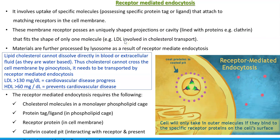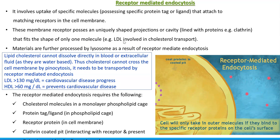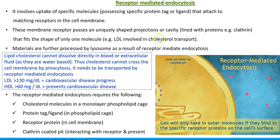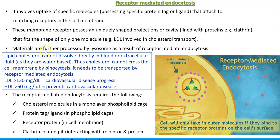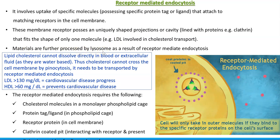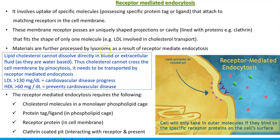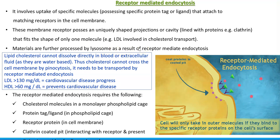For example, LDL — low density lipoprotein — is a kind of lipoprotein involved in cholesterol transport. This cholesterol is transported inside with the help of an LDL molecule. Materials are further processed by the lysosome once it has been transported inside. The receptors will be again recycled back to the surface of the membrane.